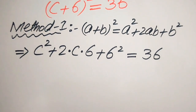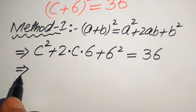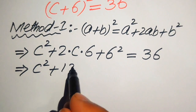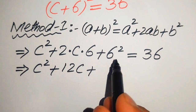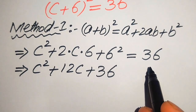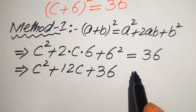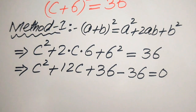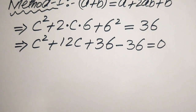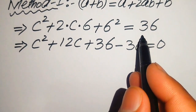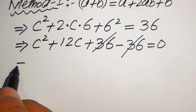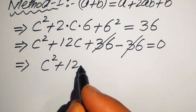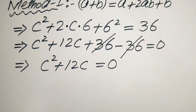Now we need more simplifications. We write it as c² + 12c, then move 36 to the left hand side where it becomes minus 36, so the whole equation equals 0. We see that minus 36 and plus 36 cancel out, and we get c² + 12c = 0.